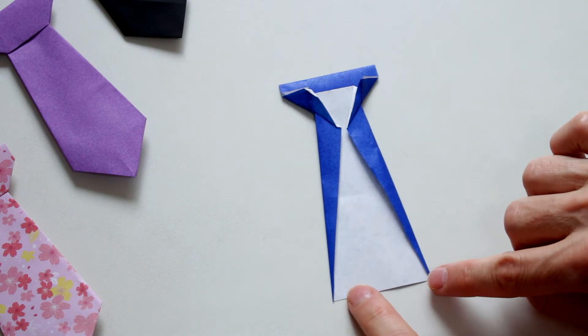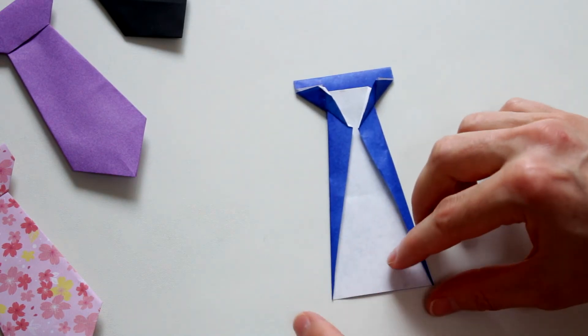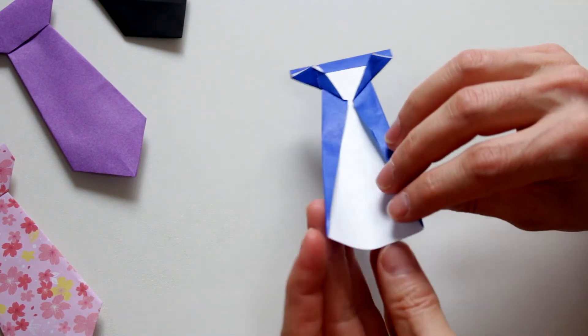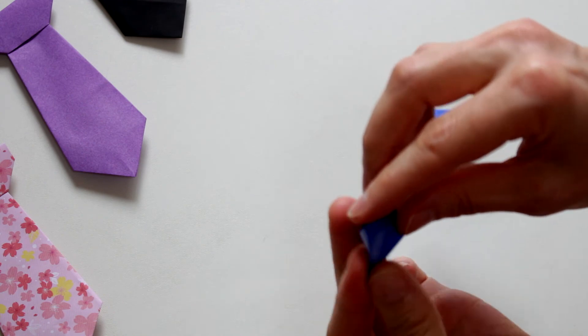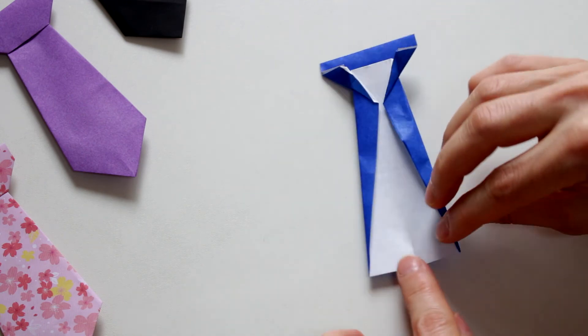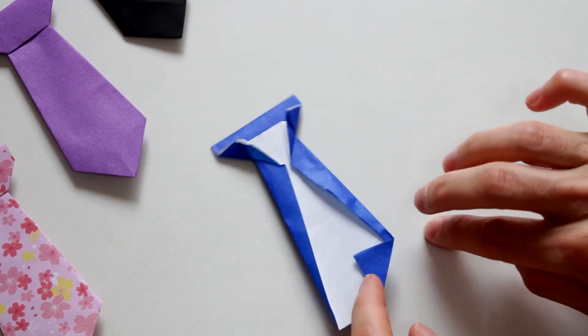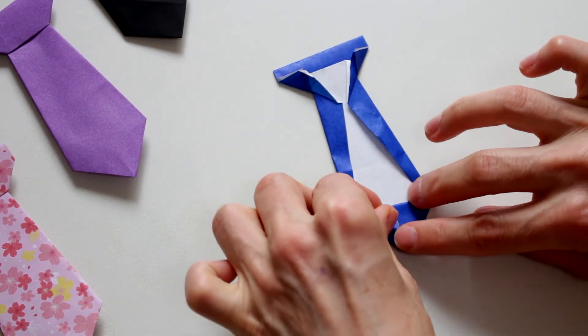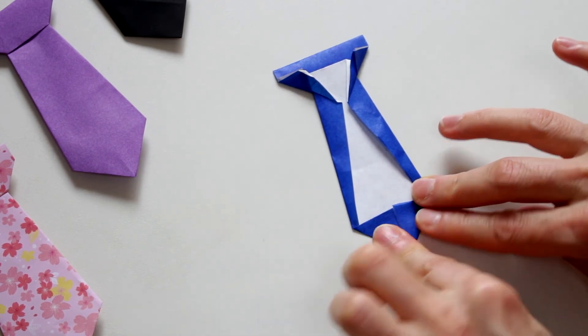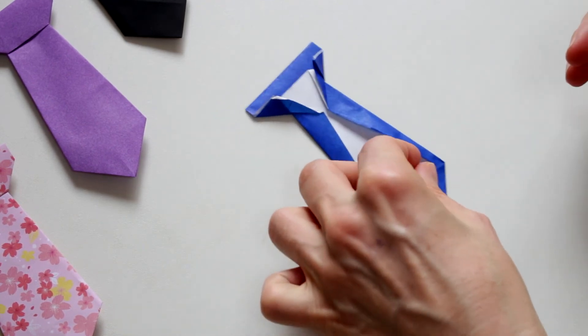And now we're gonna need to fold these two corners. But for this I need to know where the middle is. So I'll do just a little crease. And I'll fold the other corner. And it's done.